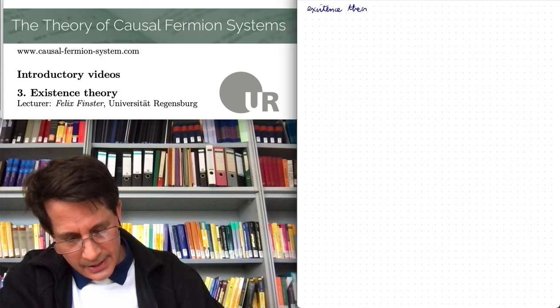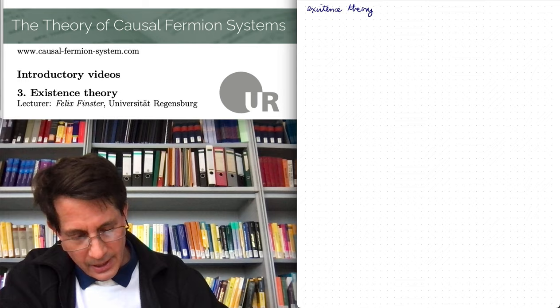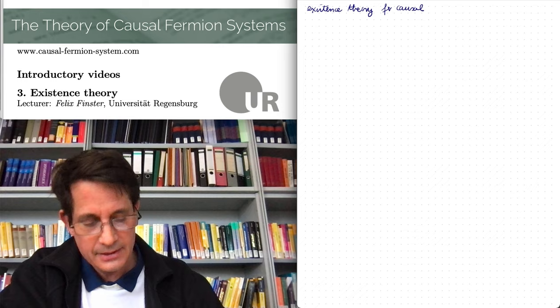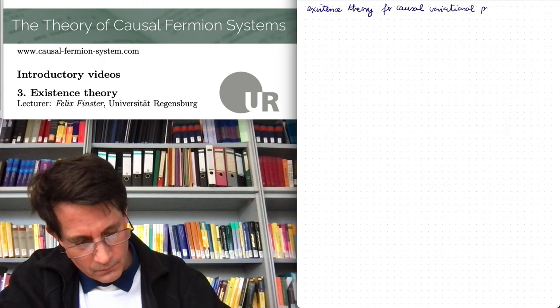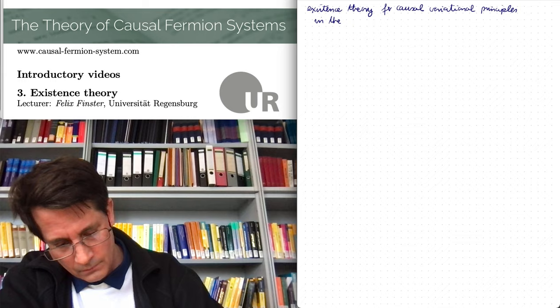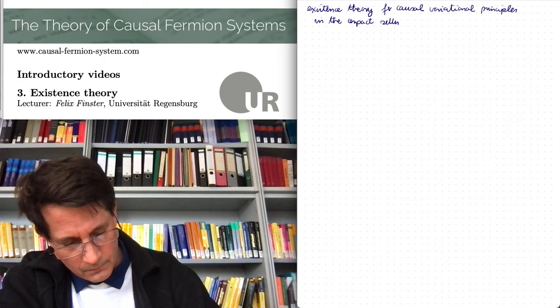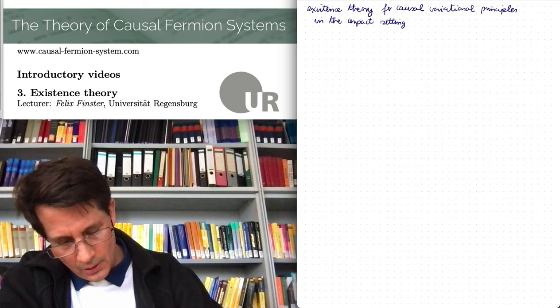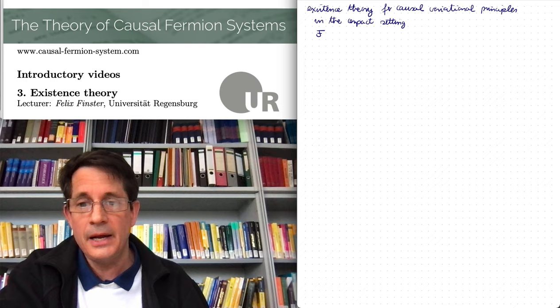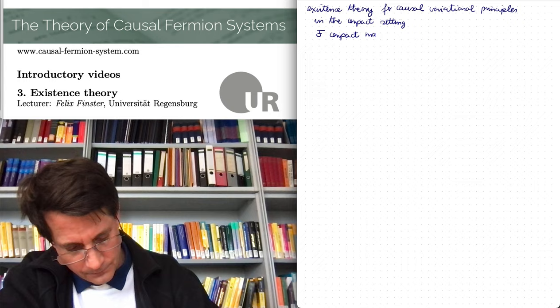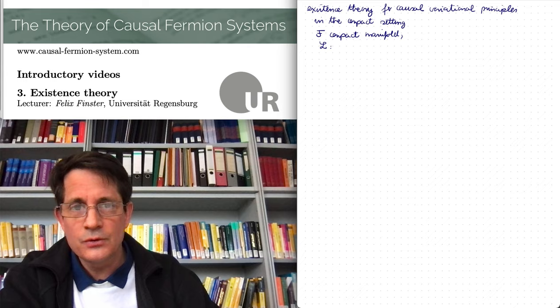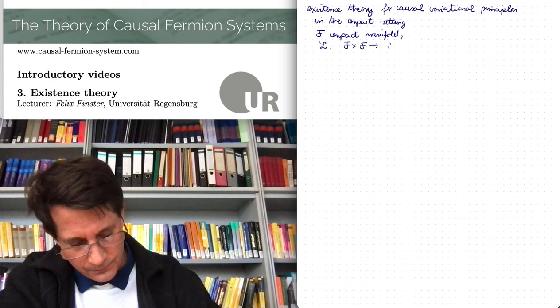Let's begin with the kind of simplest setting, namely for causal variational principles in the compact setting. So what was this setting again? We let curly F be a compact manifold. We are given the Lagrangian and we assume it to be, say, lower semi-continuous.